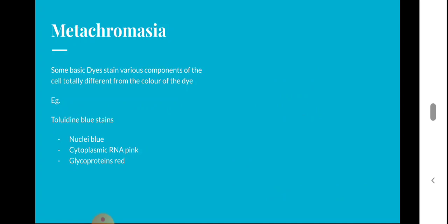The next term is metachromasia. Some stains — mainly basic stains or basic dyes — stain various components of the cell in colors totally different from the color of the dye itself. That property is known as metachromasia. For example, toluidine blue is itself blue in color, but it stains nuclei blue, cytoplasmic RNA pink, and glycoproteins red.